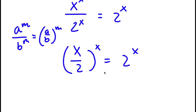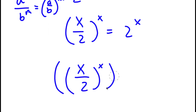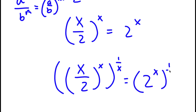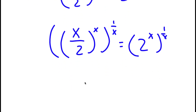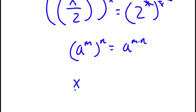Now I'm going to take the power of 1 over x on both sides. So I have x over 2 to the power of x to the power of 1 over x, equals 2 to the power of x to the power of 1 over x. Remember, a to the power of m to the power of n equals a to the power of m times n. So x times 1 over x cancels out, and on the right side x times 1 over x cancels out too.